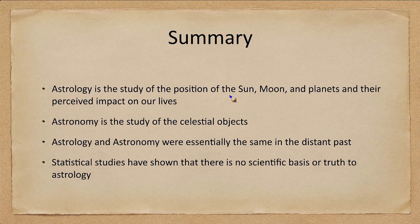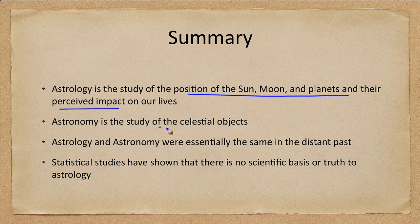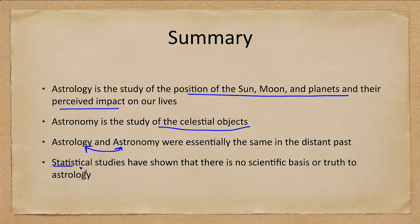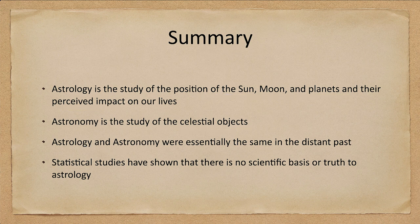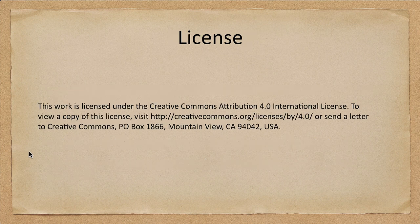To summarize: astrology is the study of the positions of the Sun, Moon, and planets and their perceived impact on our lives, whereas astronomy is the detailed study of celestial objects. In the past they were essentially interchangeable — up until about 400 to 500 years ago they were the same. However, modern studies have separated them and found there is no scientific basis or truth to astrology. That concludes this lecture on astronomy and astrology — we'll be back next time for another topic in astronomy. Have a great day everyone, and I will see you in class.